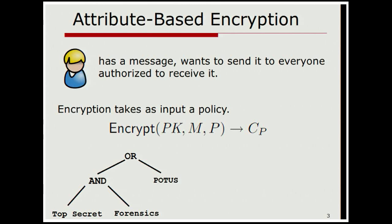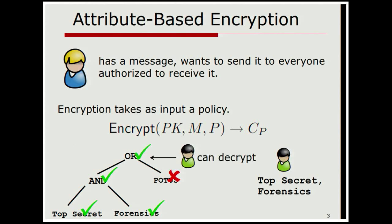Now some external party potentially comes along and wants to encrypt a message, and he wants to specify a policy that describes who should be able to decrypt the message. Let's say he does it by means of an AND-OR tree. If Bob comes along, he will be able to decrypt it because his exact set of attributes match this tree, and everything will work out. That's the basic setup.